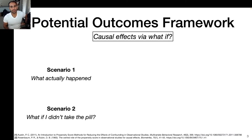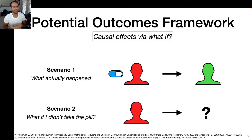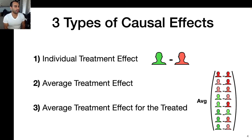The other piece of background information is the potential outcomes framework. This is a big idea in the space of causality — it's an approach to estimating causal effects through 'what if' questions. Scenario one is what actually happens: I have a headache, I take a pill, and my headache goes away. Then we ask: what if I didn't take the pill? Would I still have a headache? That's scenario two. We use this scenario one versus scenario two way of thinking to formulate causal effects, and it's embedded in all three types of causal effects we'll discuss in this video.